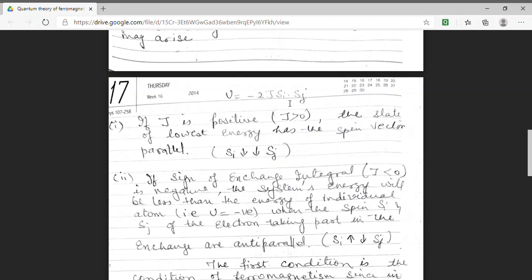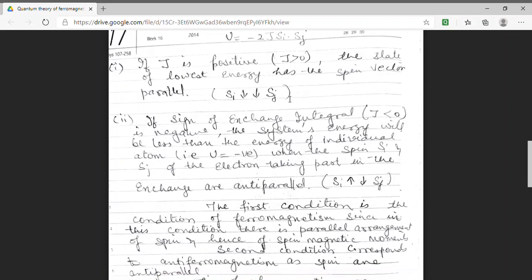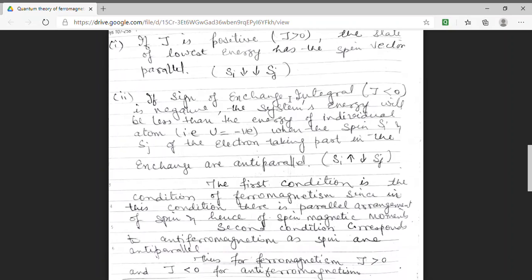We know that the first case in which the spin vectors are parallel. Students, this is the condition of ferromagnetism. And second condition in which we have shown that if Si has a spin up, Sj must have a spin opposite to it. That means it must have spin down. This is the condition of anti-ferromagnetism in which we have spins to be anti-parallel.